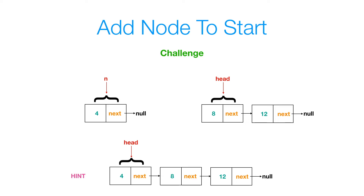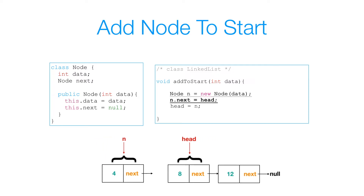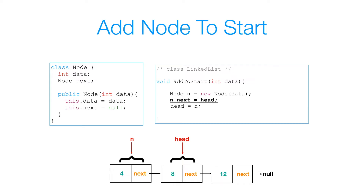Now I challenge you to add a node to the start of the list. For example, suppose I want to add the node with data 4 to the start of my list. Pause the video and give this a try. Here's the solution: when adding to the start, we don't need to loop the list because we already have a reference to the first node. I create my new node n with data 4, set n.next to reference the same object my head references, then set head to reference n. Because n is a local variable, it gets destroyed, and that's how I would add a node to the start of a list.